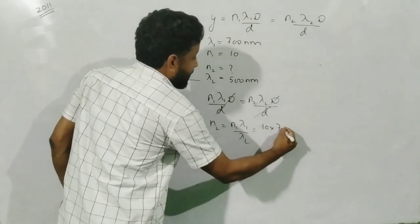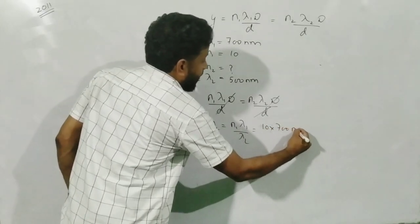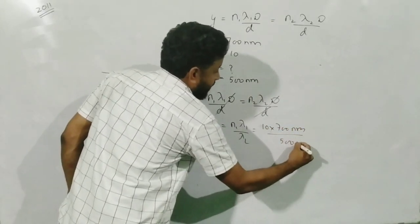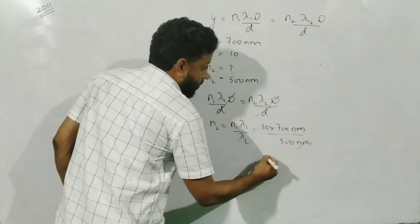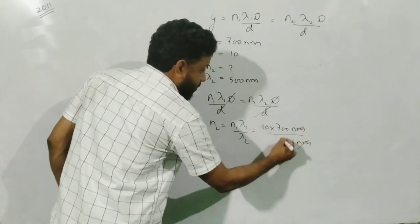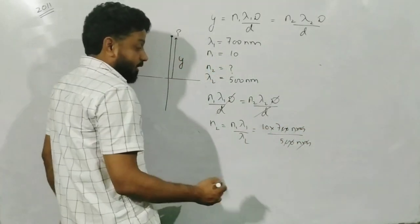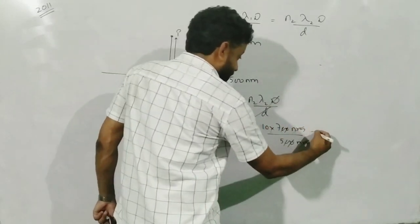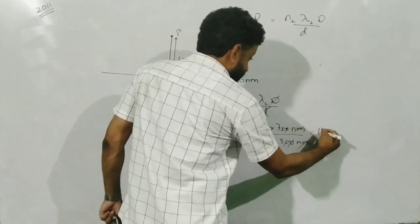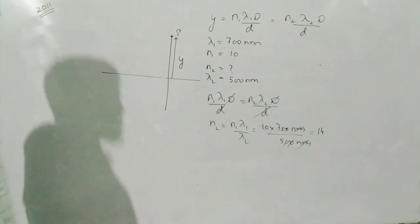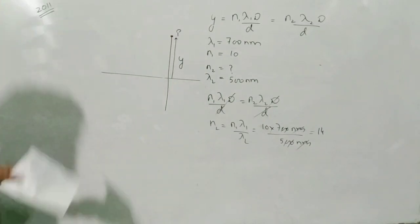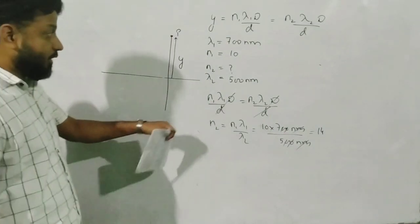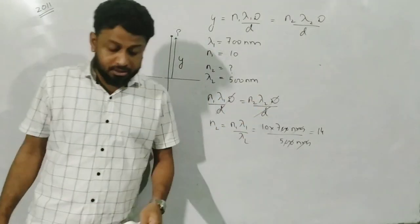Therefore N₂ = N₁λ₁/λ₂ = 10 × 700 nm / 500 nm. The nanometers and zeros cancel, giving 10 × 7/5 = 14. So the 14th order bright fringe will be obtained when you use a wavelength of 500 nanometer.